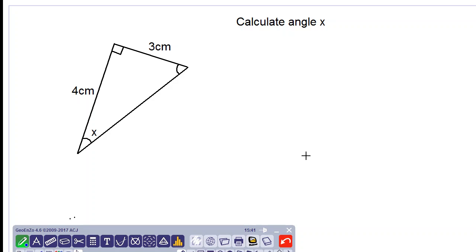Good day everyone. Today we are using the tangent ratio to calculate the size of an angle. So we have angle X in a right angle triangle and we are given the lengths of two sides. So let's use the tangent ratio to find the value of angle X.